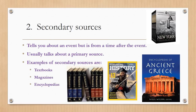Secondary sources tell you about an event, but they are from the time after the event. The key word is after. You can even underline the word after in your definition. Secondary sources usually talk about a primary source, but they're not a primary source themselves. Examples of secondary sources are textbooks, magazines, and encyclopedias. They also include documentary movies, DVD collections, and shows.